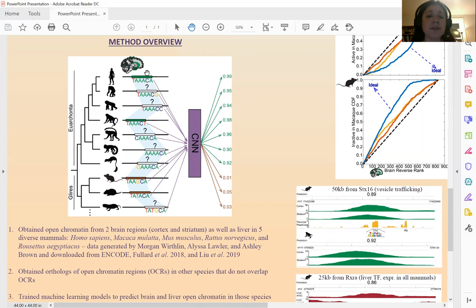We trained a convolutional neural network that predicts whether an ortholog of an open chromatin region is open, and then use that convolutional neural network to make predictions of the open chromatin status of these open chromatin regions throughout the mammalian phylogeny. The data was generated by Morgan Wirthlin, Alyssa Lawler, and Ashley Brown, and supplemented with public data.